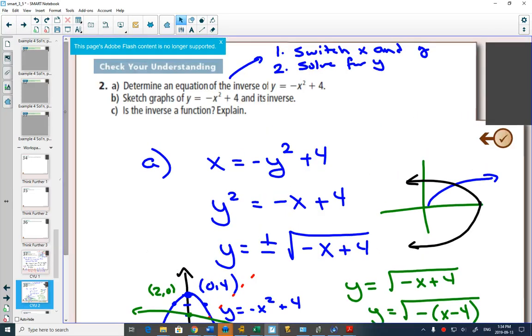Part A, determine the equation, good. Part B, sketch the graphs and their inverse, done. Part C, is the inverse a function? No, it does not pass the vertical line test. Some x values have more than one y value.